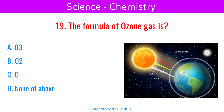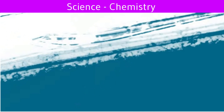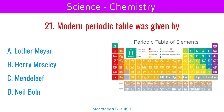The formula of ozone gas is O3. Least reactive element belonging to group 17 is iodine. Modern periodic table was given by Henry Moseley.